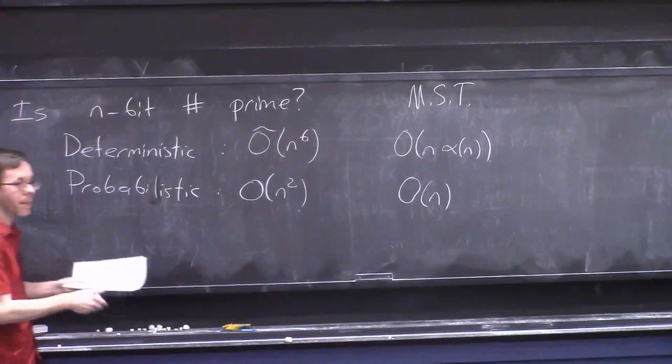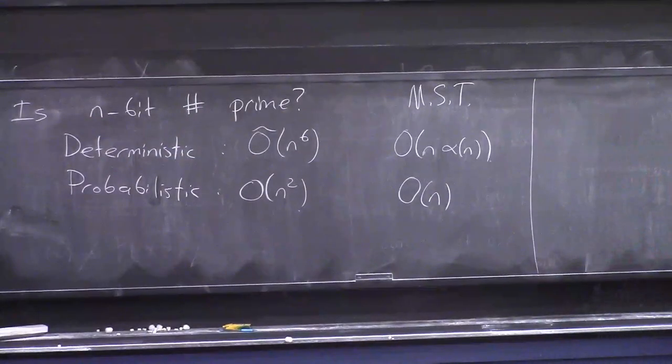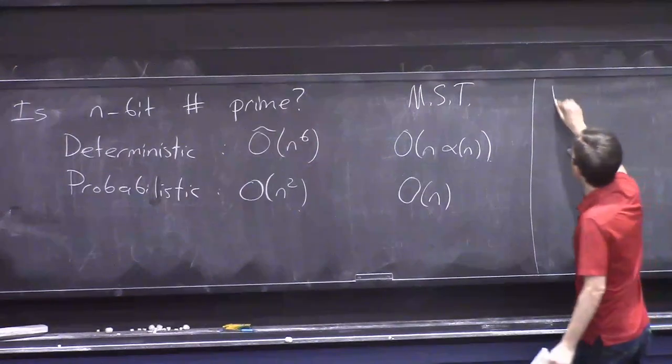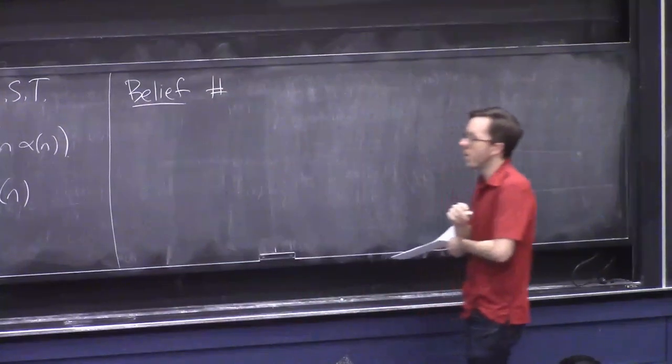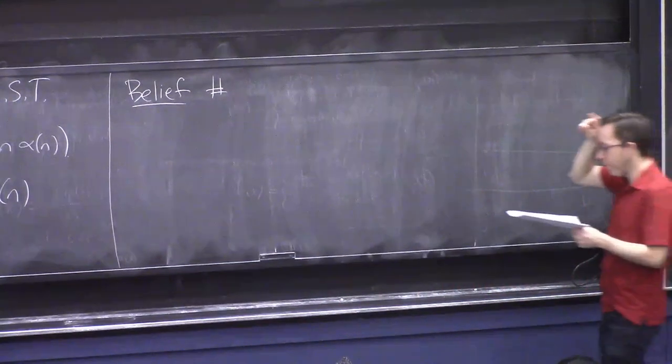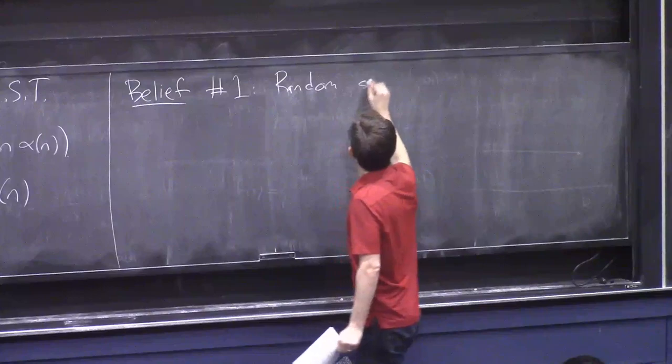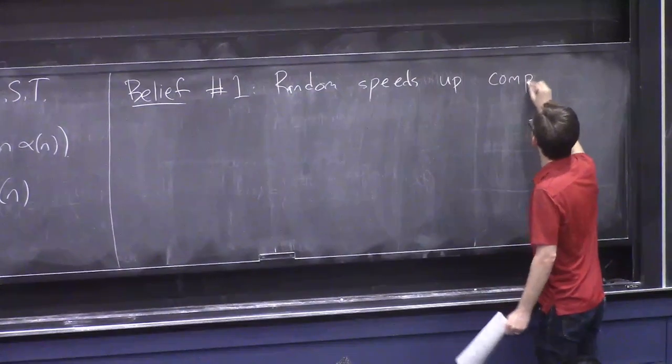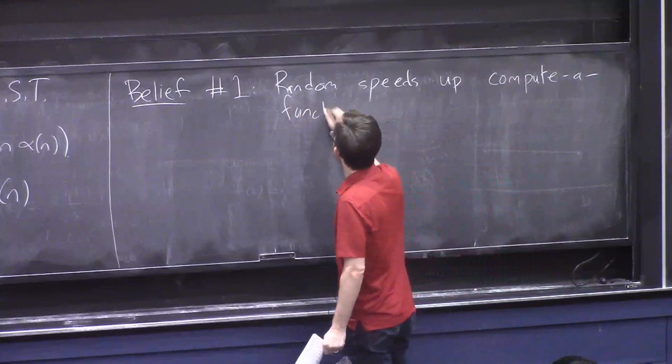Now, you can ask how exciting can this possibly get, and I'll tell you what is known, or sorry, I'll tell you what's believed about the ability of probabilistic computation to speed up over deterministic computation. So, one belief, and all of these beliefs are backed up by well-understood complexity theory assumptions. Belief number one is that randomness speeds up kind of basic computer function-type tasks, like these ones, by at most a polynomial amount.